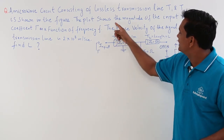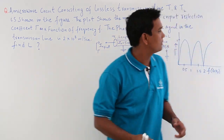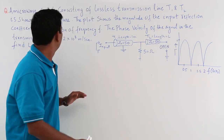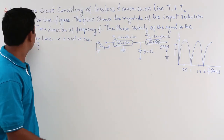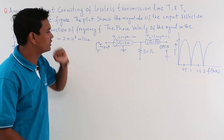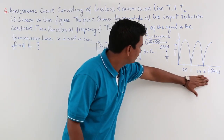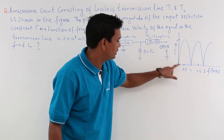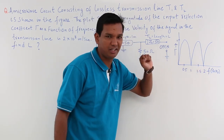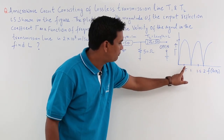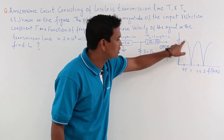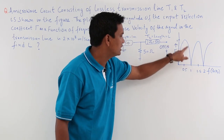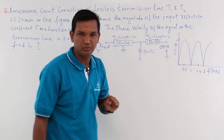There is a plot of input reflection coefficient tau as a function of frequency. You can observe that at 0.5 gigahertz the reflection coefficient is maximum, which is 1, and at 1 gigahertz the reflection coefficient is 0.